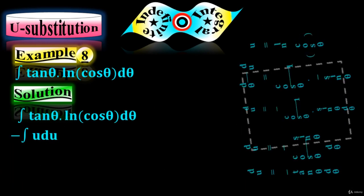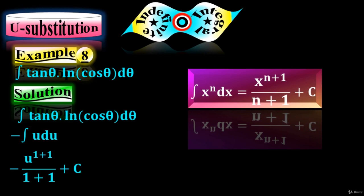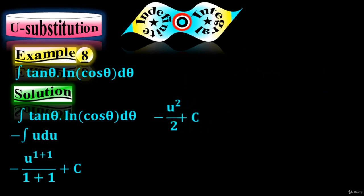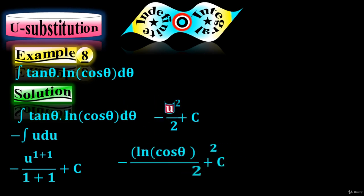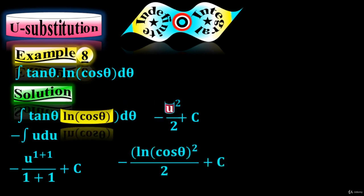Take the integration of u. The integral of u is u to the 1 plus 1 over 1 plus 1, plus an arbitrary constant — applying the power rule where n equals 1. The final expression is u² over 2 plus C. Now substitute back u = ln(cos(θ)), giving ln²(cos(θ)) over 2 plus C. And that's the final answer.